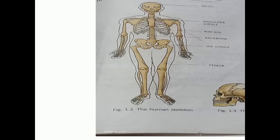Bones are made up of living tissues — calcium, phosphate, potassium. Hence, the bones are hard and strong. Can you tell me which is the hardest part in our body? Bones are not the hardest part. The correct answer is enamel, the outer covering of a tooth.